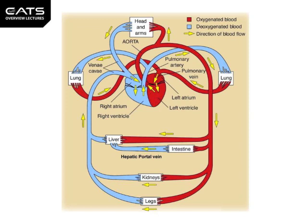Blood leaving the tissues and organs, such as the kidneys and legs, is deficient in oxygen — it is deoxygenated. It travels via veins back to the vena cava, the largest vein in the body, to pool back into the right atrium of the heart.